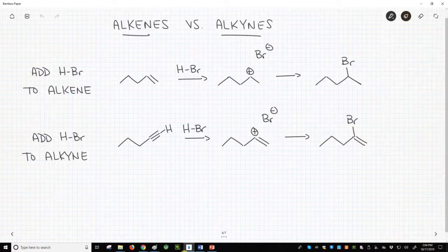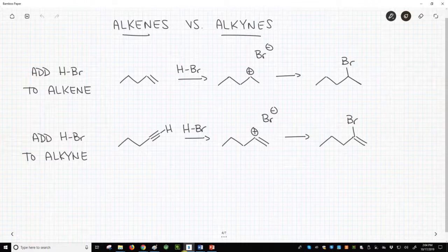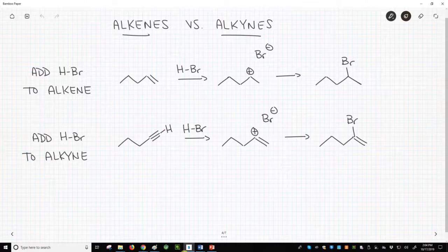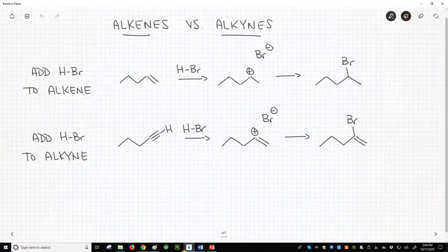An alkene has one, and an alkyne is blessed with a double portion, two C-C pi bonds. It would be natural to think that whatever addition reactions we learned on alkenes would also apply to alkynes.